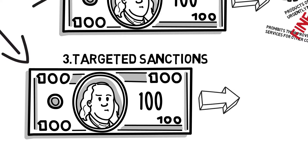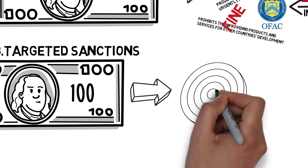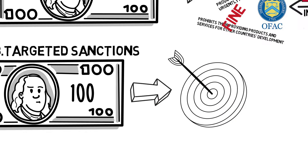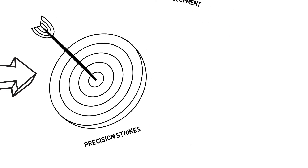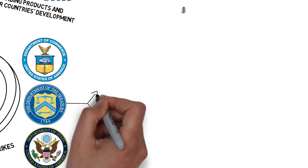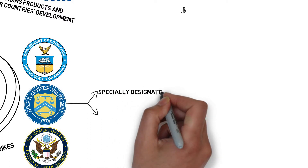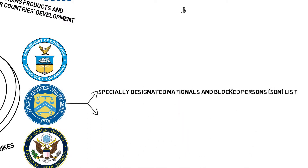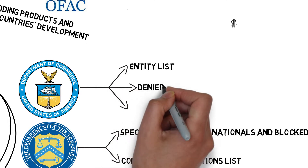Three: targeted sanctions. Targeted sanctions directly target specific individuals or entities that harm the national interests of the United States by including them on various sanctions lists in order to achieve precision strikes and thus avoid accidental injury. The main implementing agencies are the U.S. State Department, the Treasury Department, and the Department of Commerce, all of which have issued sanctions lists. The State Department has issued a list of individuals and entities that violate the policy of non-proliferation of weapons of mass destruction. The Treasury Department released the Specially Designated Nationals and Blocked Persons (SDN) list and the Consolidated Sanctions list, while the Department of Commerce released the Entity list, Denied Persons list, and Unverified list.